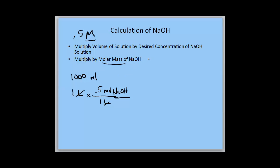To calculate the molar mass of NaOH, we have 23 plus 16 plus 1, which gives us 40, and that has units of grams per mole.